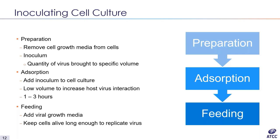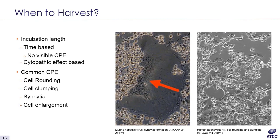The incubation step is a waiting game where the infection is allowed to progress until enough replication has occurred to harvest. For most viruses, harvest timing is based on the presentation of cytopathic effects, or degenerative changes observed in host cells. Some common cytopathic effects are cell rounding and clumping, observable in human adenovirus 41 infection, as well as cell enlargement and syncytia — where infected cells fuse together into one giant cell with multiple nuclei, as seen in murine hepatitis infection.